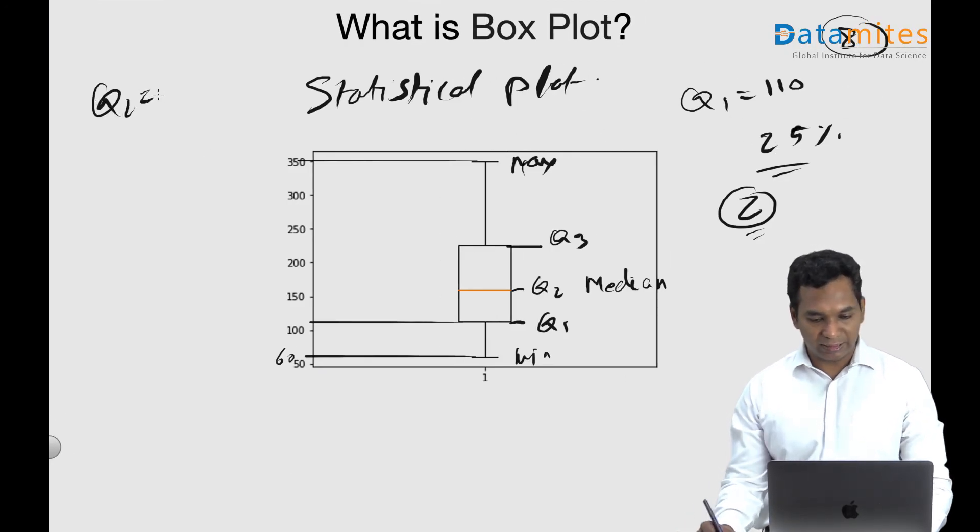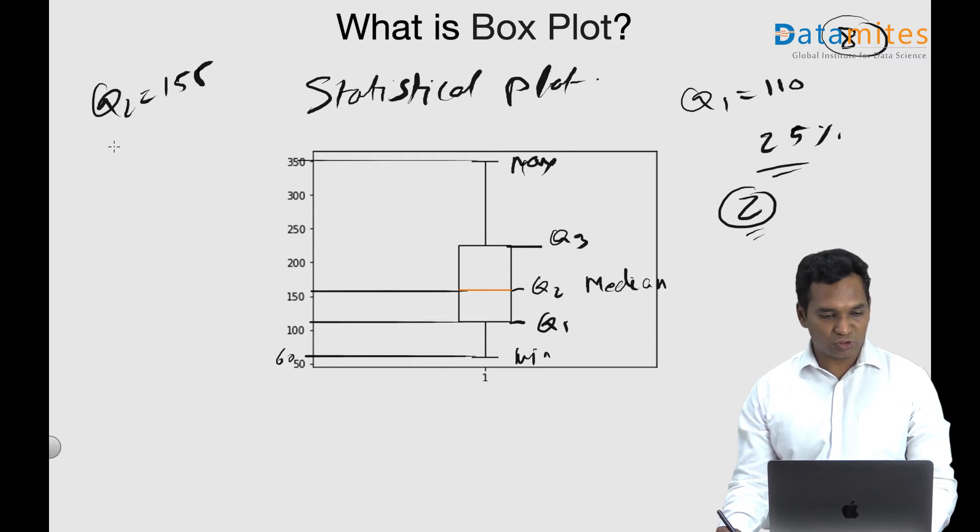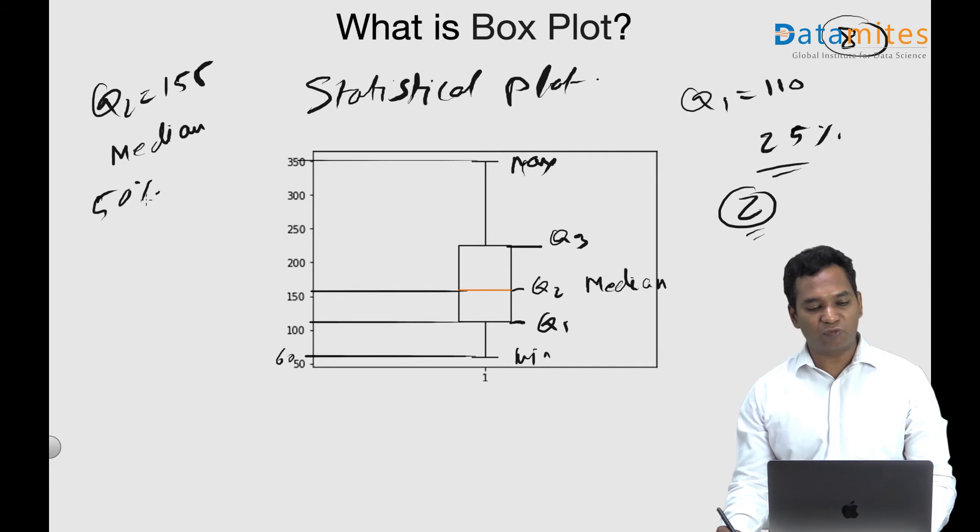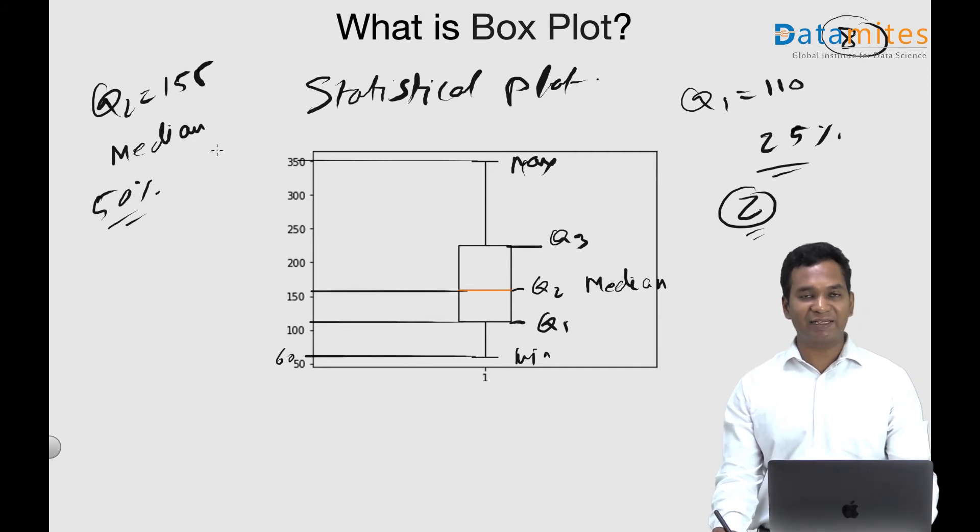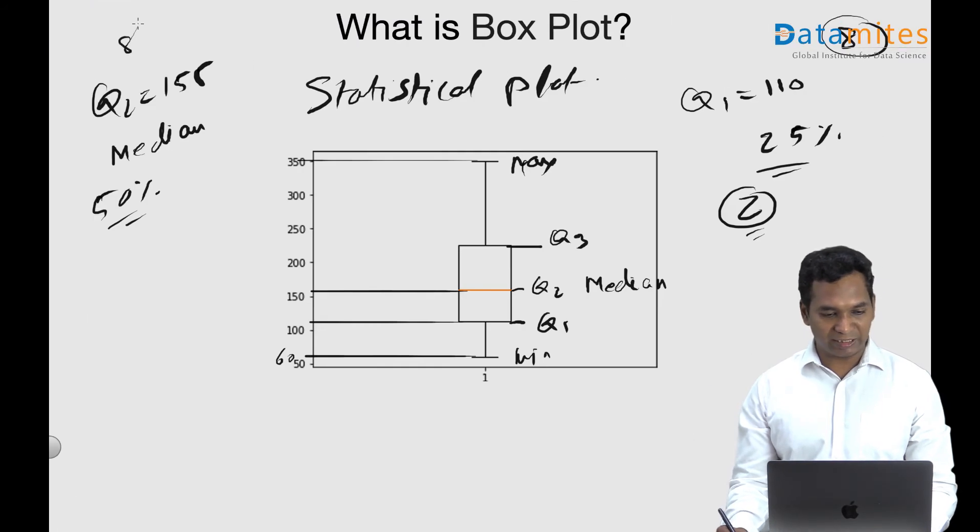Quartile 2, for example in this case, is let's say 160 or 155, and this is also known as median, which is the middle line. This means that 50 percent of your employees have a salary less than or equal to 155. Let's look at it. We have eight members all together. So how many are less than 155?